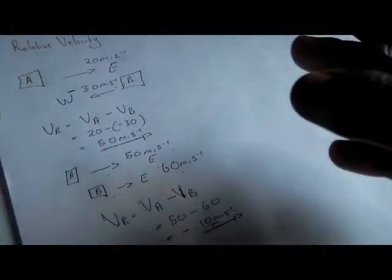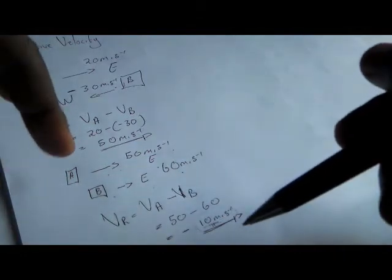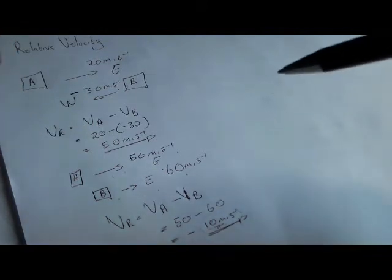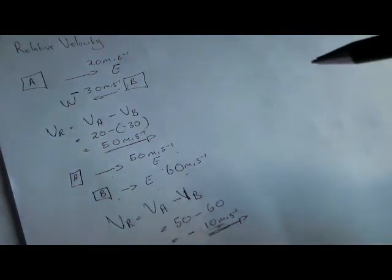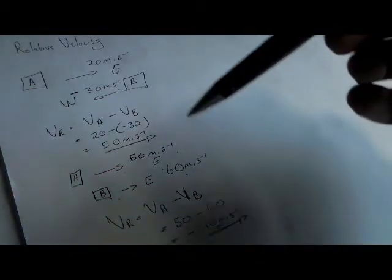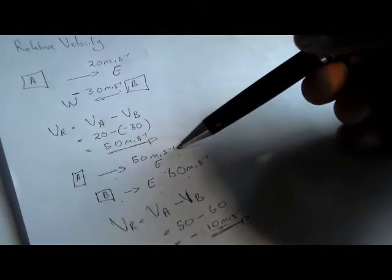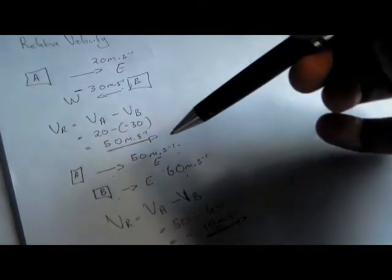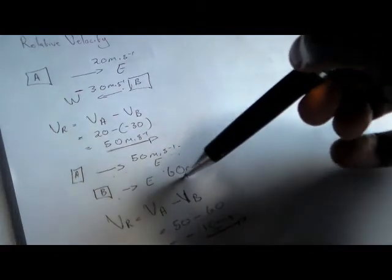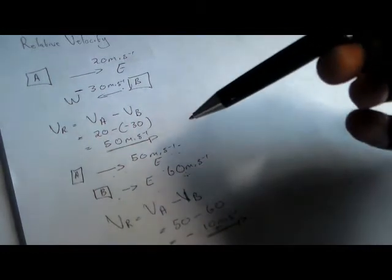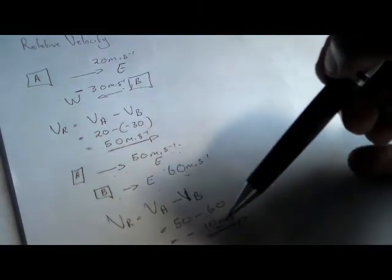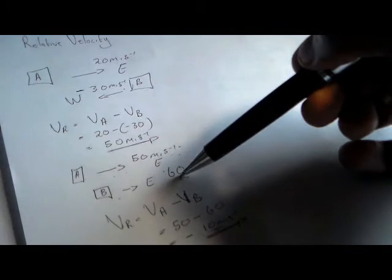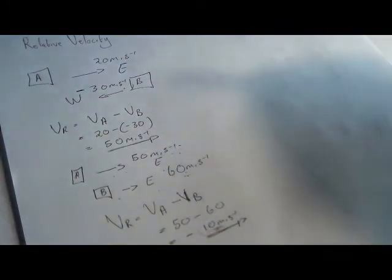This is the relationship between body A and body B. If you are in body A moving at 50 meters per second, and body B passes body A at 60 meters per second, you will see that car moving at only 10 meters per second, because you are already moving at 50 and body B is more by 10 meters per second.